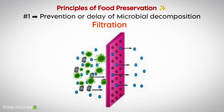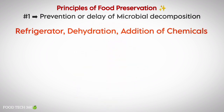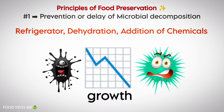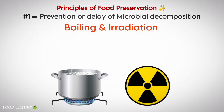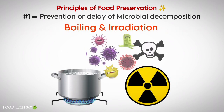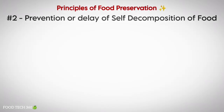Refrigeration, dehydration, and addition of chemical preservatives work by hindering the growth and activity of microorganisms. Boiling and irradiation work by killing microorganisms. The next principle is prevention or delay of self decomposition of food.